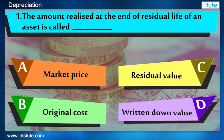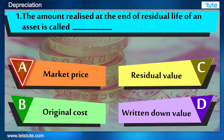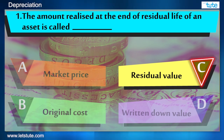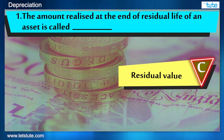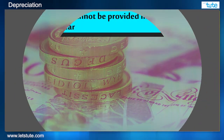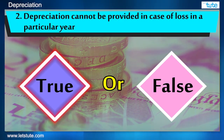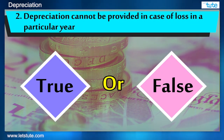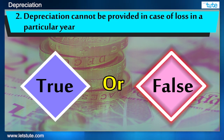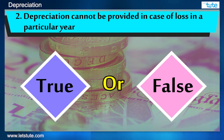The amount realized at the end of residual life of an asset is called — true or false? Depreciation cannot be provided in case of loss in a particular year.